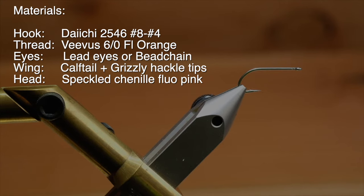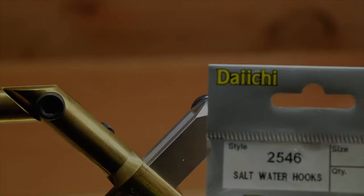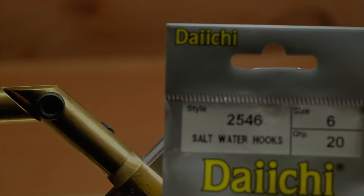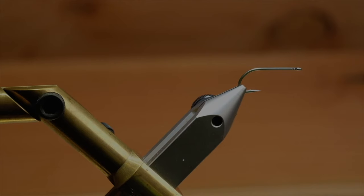So let me start with what I got in the vise. I've put a Daiichi 2564 in a size 6 and it's one of my favorite bonefish hooks. I use this one and I use the 452, the X452. It's basically the same hook.